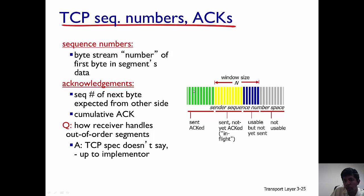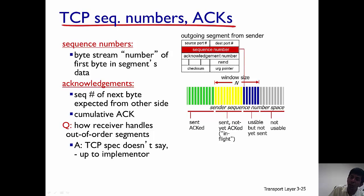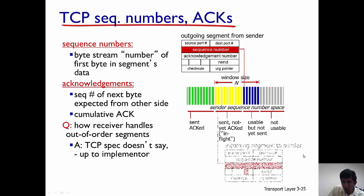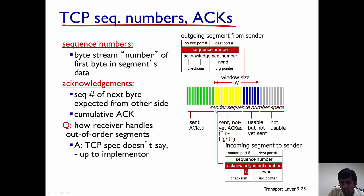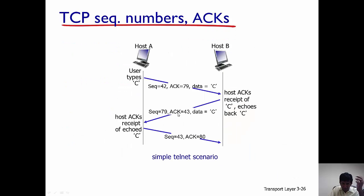The gray bars represent sequence numbers not currently usable until further acknowledgements come from the receiver. When the sender sends a new packet, it picks the first sequence number from the blue bar. When an incoming segment arrives at the sender, it acknowledges that first bar, and the acknowledgement number in the incoming segment is the sequence number of the next byte expected — pointing to the second yellow bar.